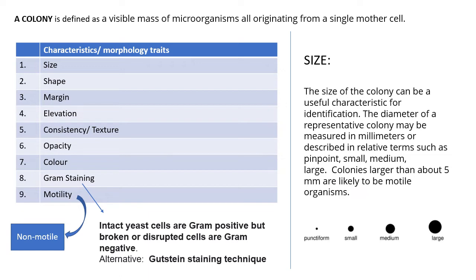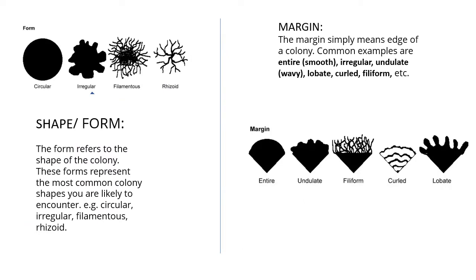Then comes shape or form. The shape refers to the overall shape of the colony. The most common colony shapes you are likely to encounter are circular, irregular, filamentous, and rhizoid. Depending on your observation, you need to report the characteristic.